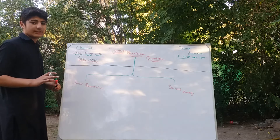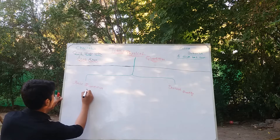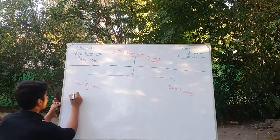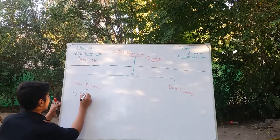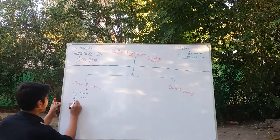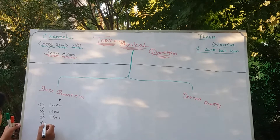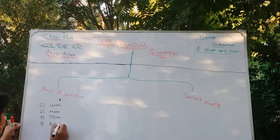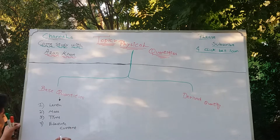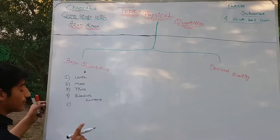There are seven fixed base quantities — remember this in your mind. Number one is length, number two is mass, number three is time, and number four is electric current. It is only seven fixed base quantities.